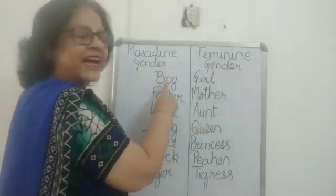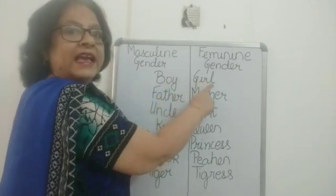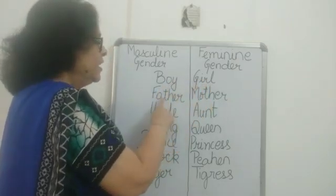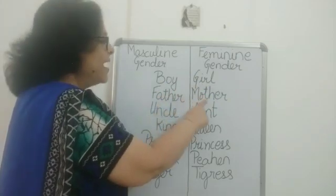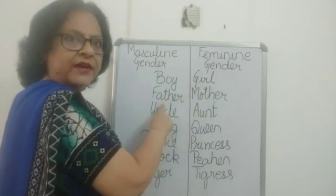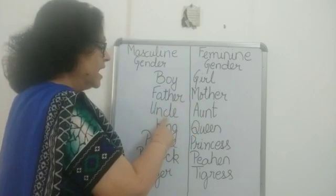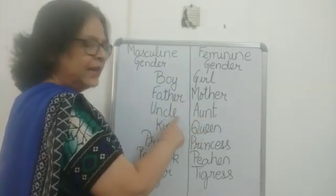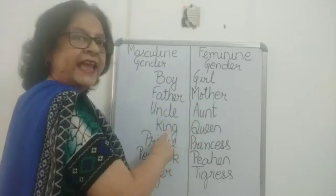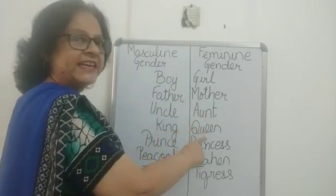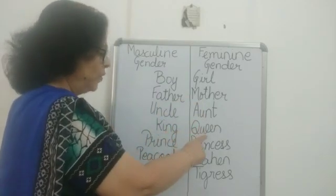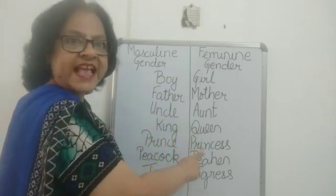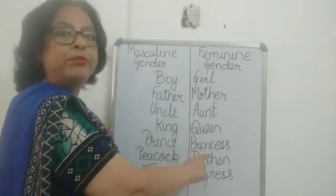So here it starts. Boy — girl. Father — mother. Uncle — aunt. King — queen. Prince — princess.